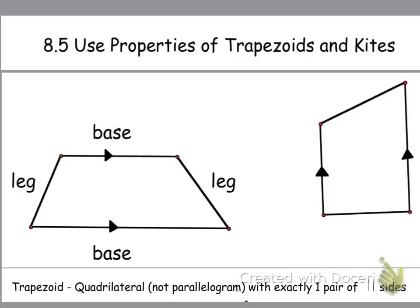Alright, we're going to talk about 8.5 today, the use of properties of trapezoids and kites, our last section before we go into taking our test and move on.